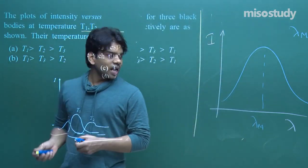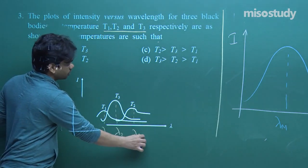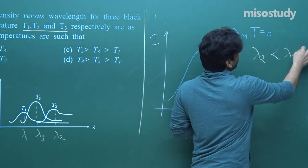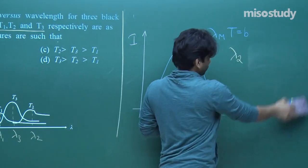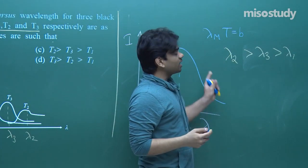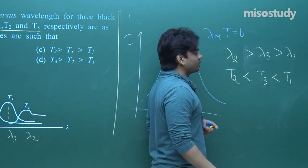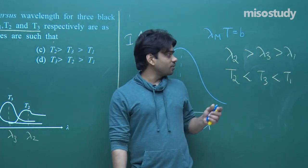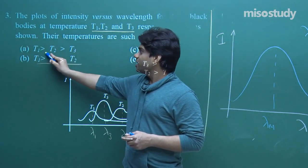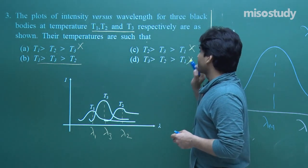If we mark lambda_1, lambda_2, and lambda_3 for the three cases: lambda_1 is the minimum, lambda_2 is the maximum, and lambda_3 is in between. Since temperature and lambda are inversely related, T1 will be the highest temperature, then T3, and T2 will be the lowest. So T1 > T3 > T2 — that is option B. Options A, C, and D are incorrect as they place T2 or T3 as highest.